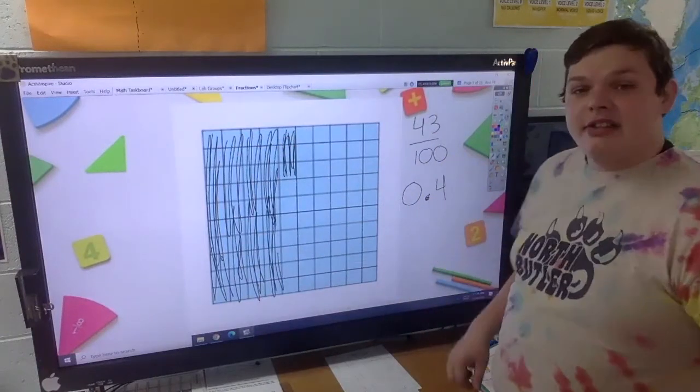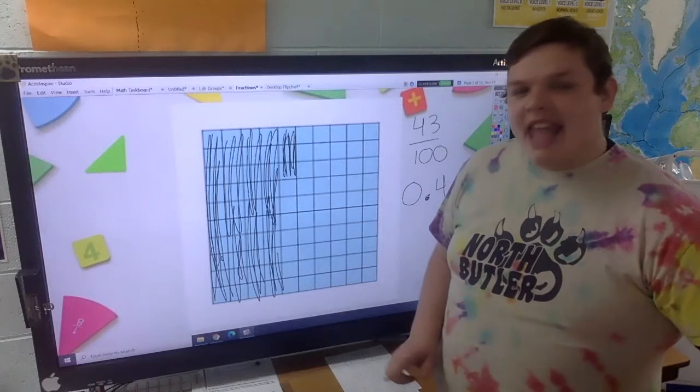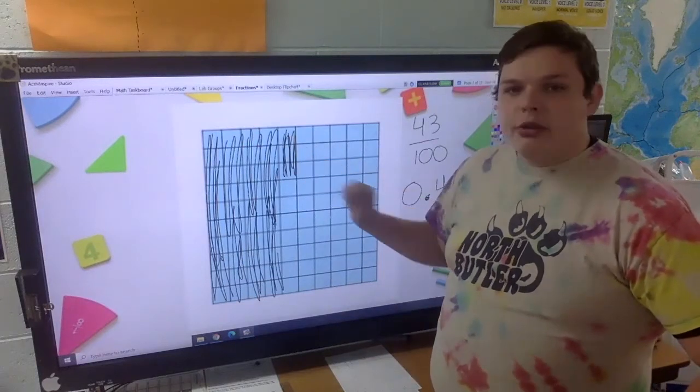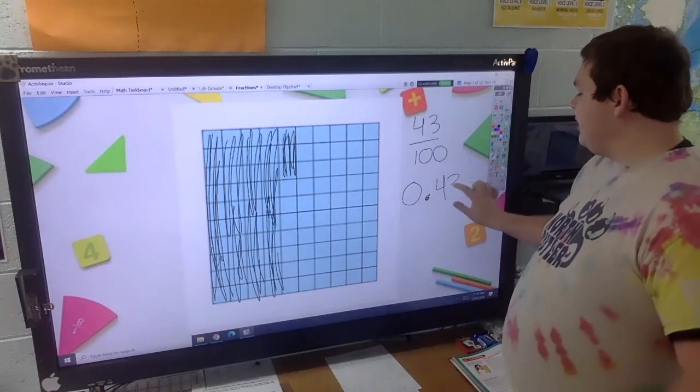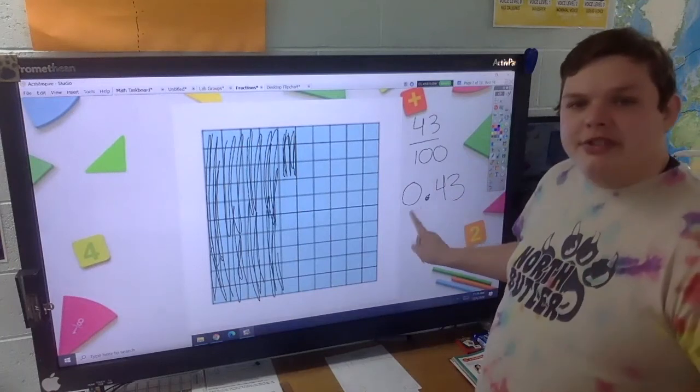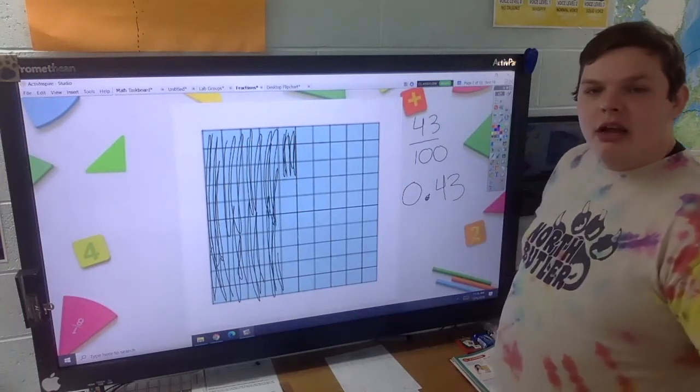So we can put four in the tenths spot. And then we have one, two, three of the hundredths. So let's put three in the hundredths. That decimal is zero and 43 hundredths.